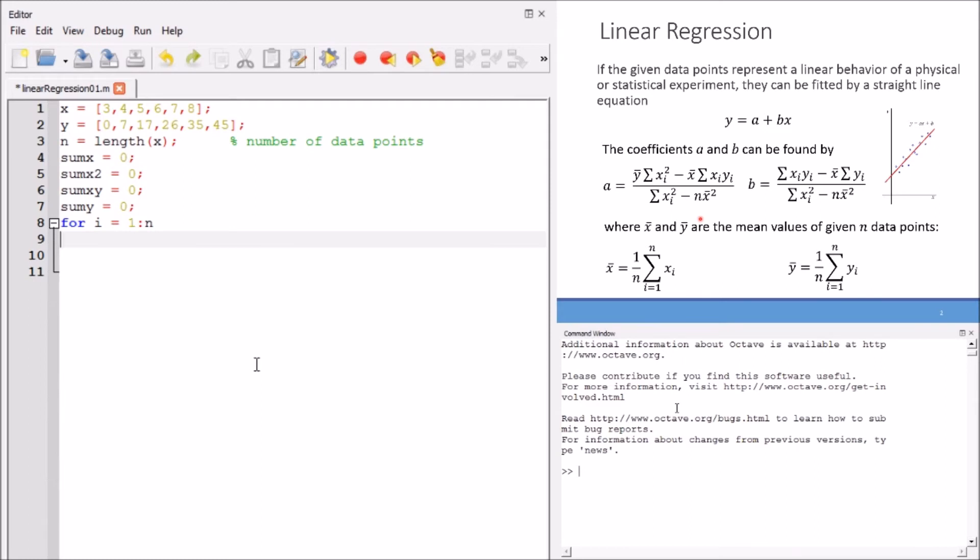We don't need to use multiple loops, because notice that all variables here, x sub i, y sub i, x square sub i, all these values are subscripted with i, and i goes from 1 to n. Only one loop is enough to compute the required summations.